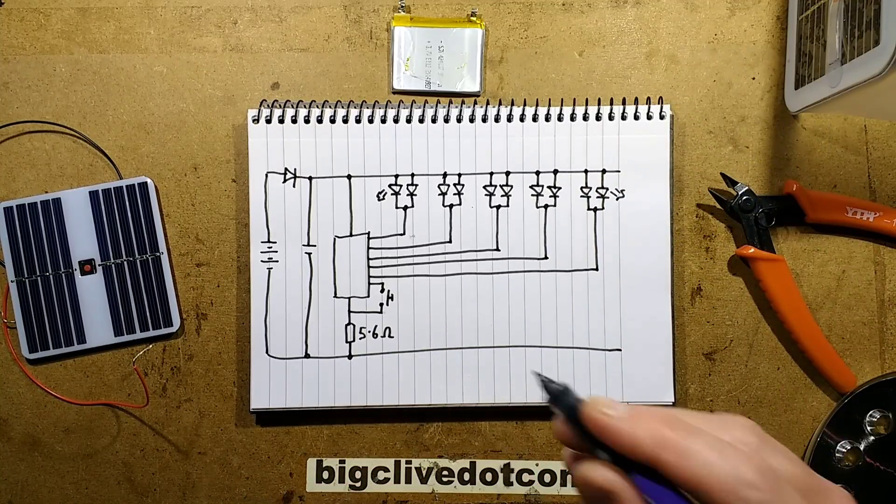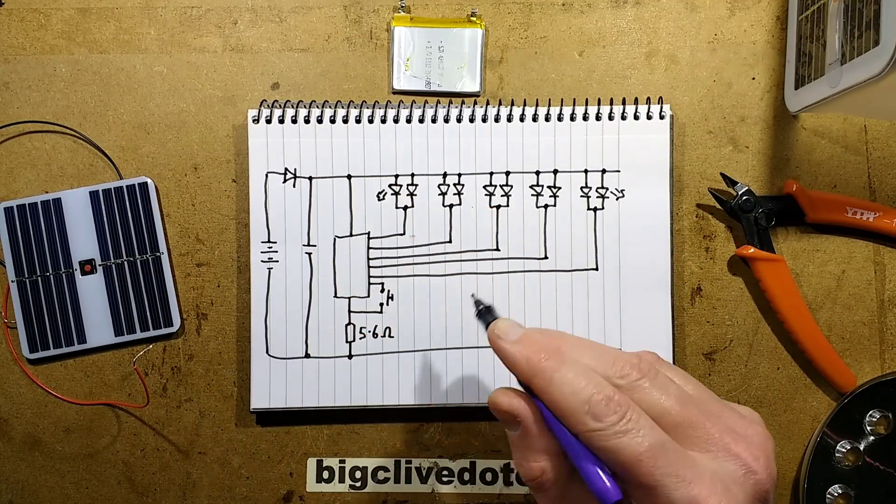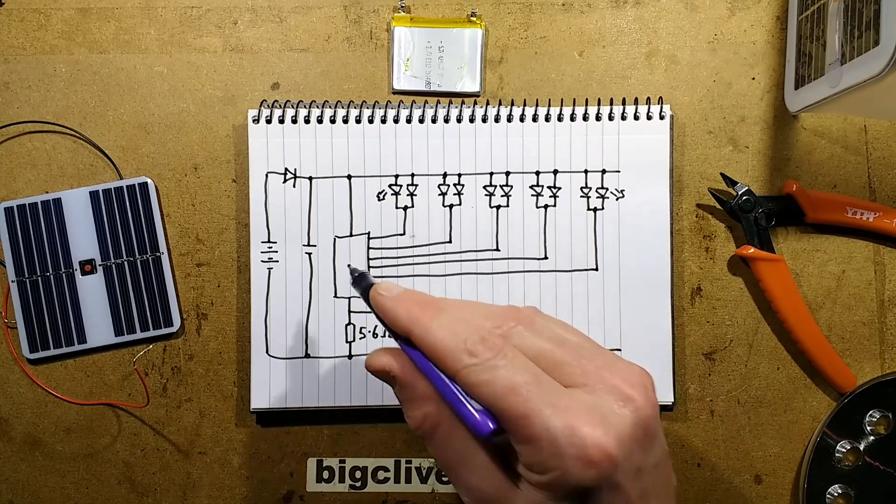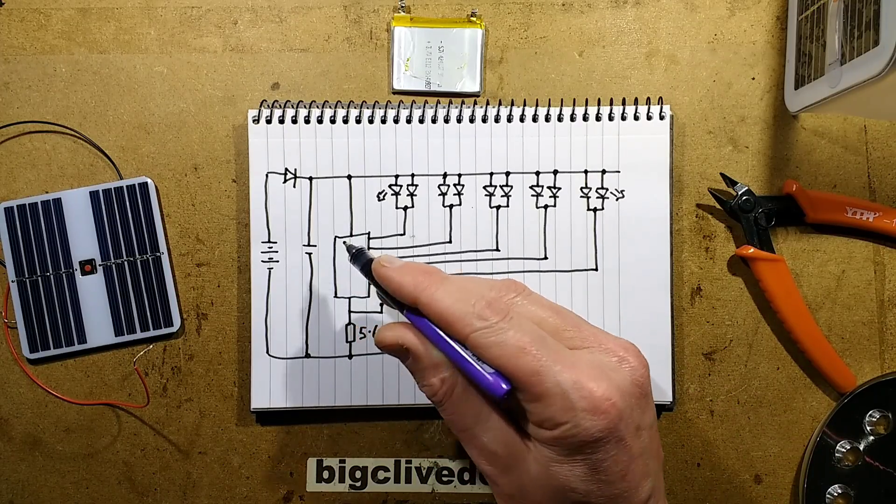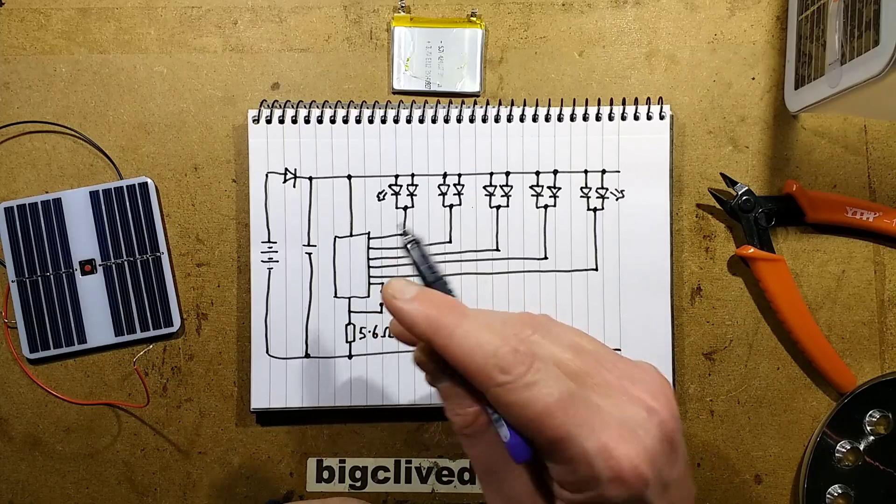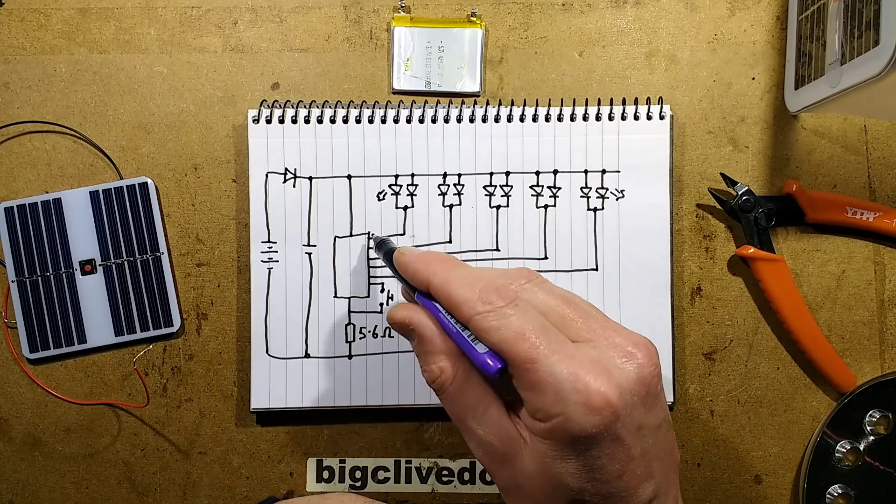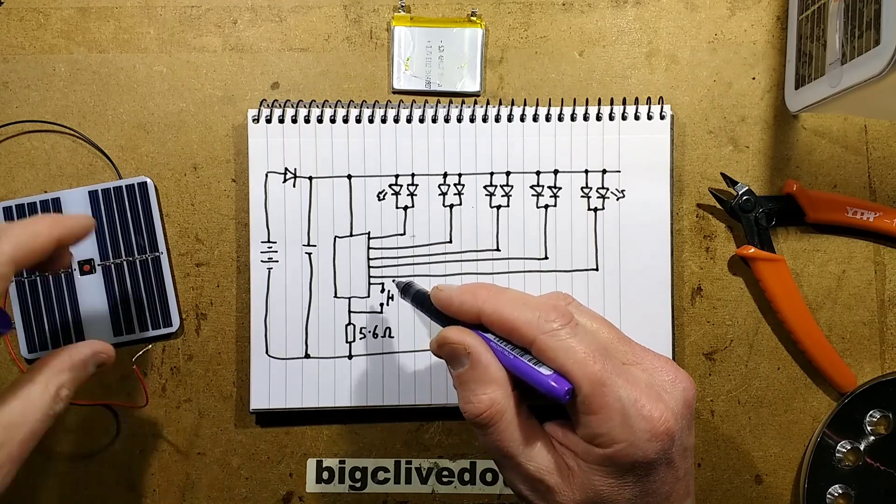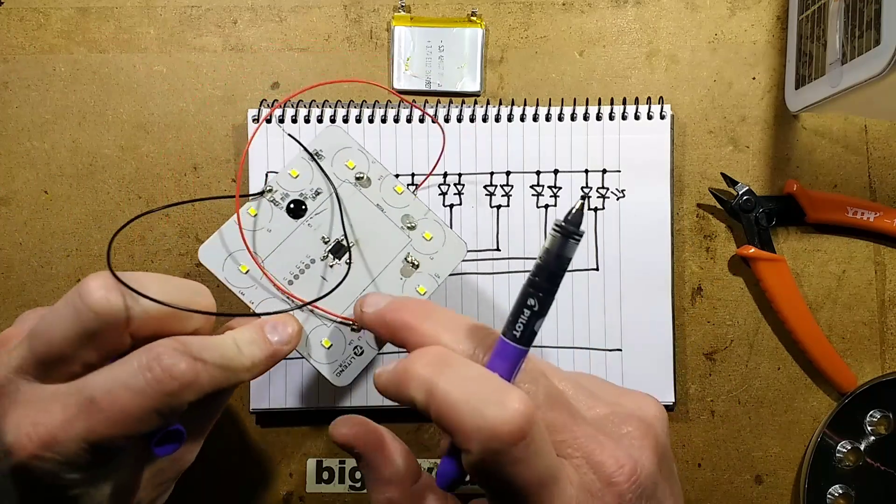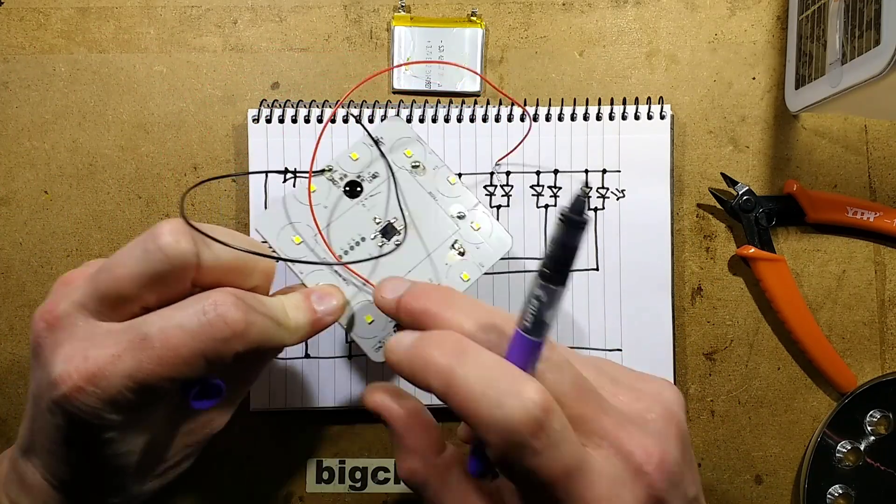However, beyond that huge flaw that kind of spoils this product, we have the flasher chip. Well, I say flasher chip, it looks like a chip that's been designed for the sort of bicycle lights that strobe backwards and forwards. It's got five outputs. That's what I was looking at all those test points earlier - they're the test pins for the LEDs.